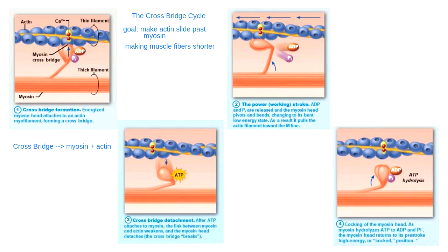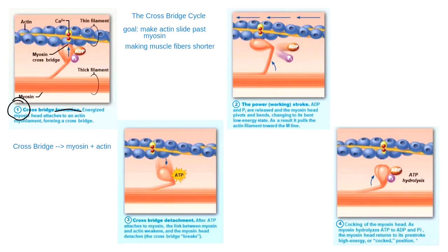There are four steps to muscle contraction. The first thing we want to know at every step is whether myosin and actin are attached to each other. Step one, over here on the left, is called crossbridge formation. In crossbridge formation, I am attaching myosin to actin. Myosin and actin are definitely attached to each other because that's the whole goal of this step.